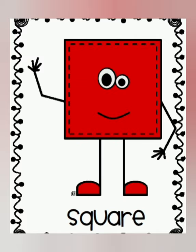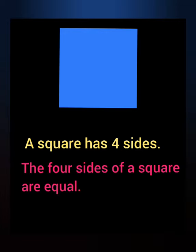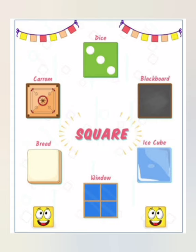You can see this is one square — S-Q-U-A-R-E, square. A square has four sides, and the four sides of a square are equal. That is the difference with a rectangle. Here are some things which have a square shape: dice, blackboard, ice cube, winter pants, bread, and carom board.